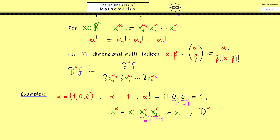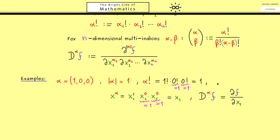Now let's calculate D^alpha of a function f for this same alpha. Since the components for x2 and x3 are zero, they do not appear in the partial derivative. The order of the partial derivative is 1, and the only remaining component in the denominator is x1 with power 1. So D^alpha f is simply the partial derivative of f with respect to x1. As you can see, this is not complicated at all.